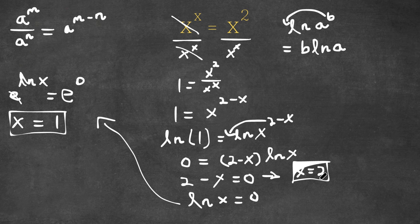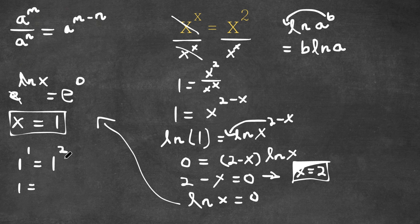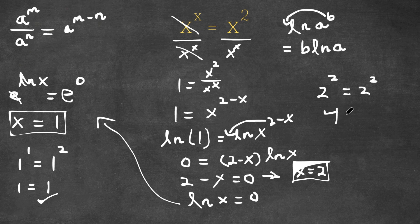So our two solutions are x equals 1 and x equals 2. Let's go ahead and plug them into our equation. If we first plug in 1, we get 1 to the power of 1 is equal to 1 squared. 1 to the power of 1 is 1, and 1 squared is also 1, so this is right. Now let's check x equals 2: we have 2 to the power of 2 is equal to 2 to the power of 2. 2 squared is 4, so we have 4 is equal to 4, and this is right as well. So our two solutions are x equals 1 and x equals 2.